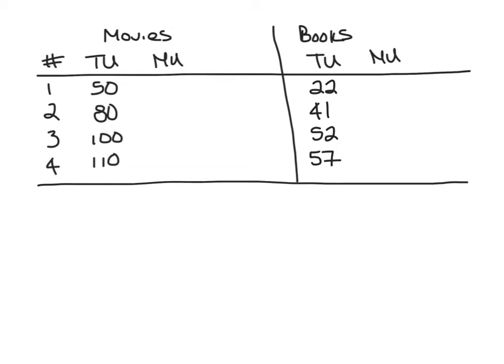In this example, we consider Marissa and her optimal allocation of a monthly budget of $80 that she could spend on some combination of movies and books. In this table, we have the utility that she gets from different numbers of movies or books. Our task is to figure out how many movies and how many books she should spend her $80 on, and we're going to assume that both movies and books cost exactly $20.